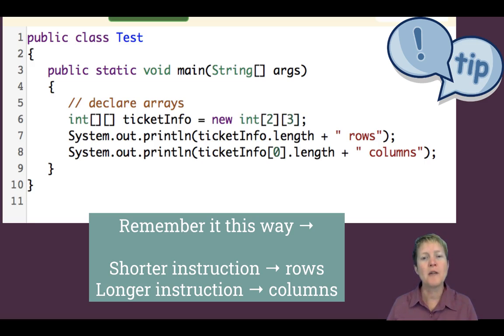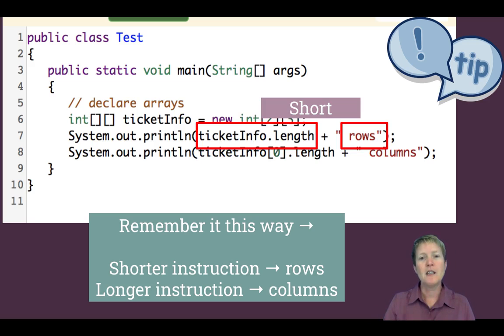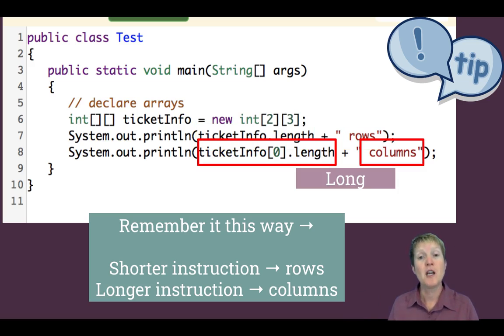Just give them the following cheat to remember it. This is how we all do it. For the shorter instruction that gives you the shorter word, rows is a shorter word than columns. So ticketInfo dot length, that's shorter than ticketInfo sub zero dot length. Okay. So that gives you, that's short, it gives you the number of rows. The longer instruction, ticketInfo sub zero dot length, that gives you columns.